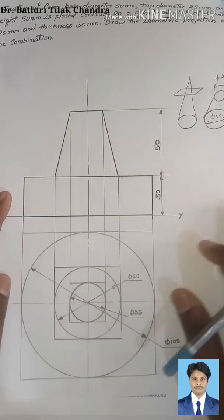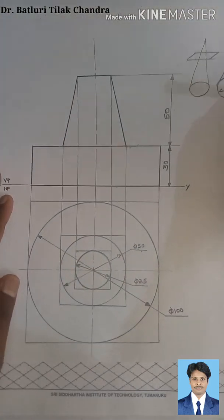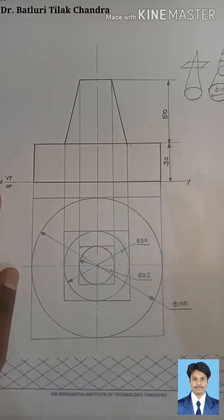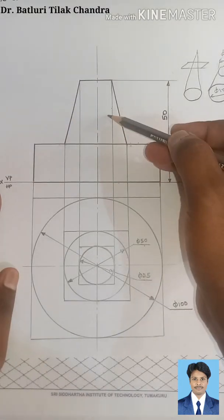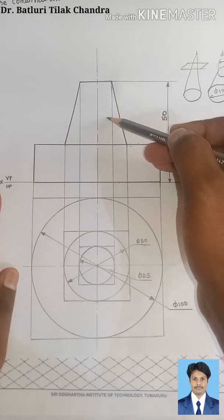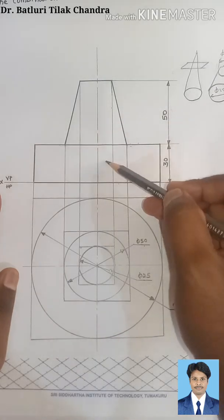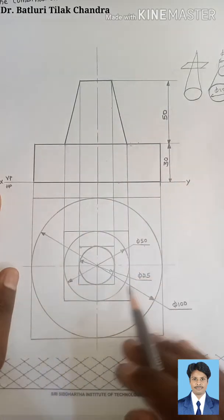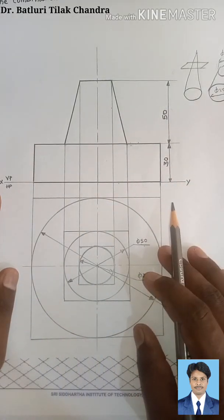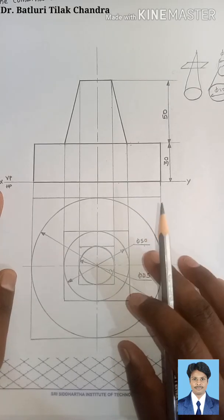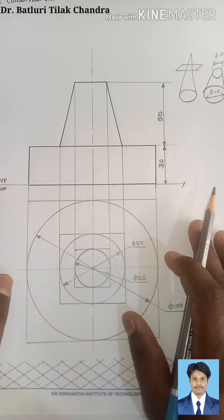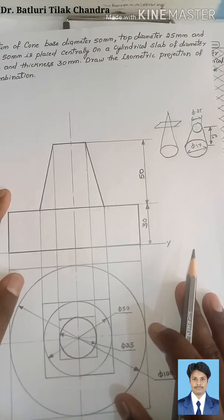Let us see the orthographic view of this problem. Here you can see in the front view the frustum of a cone, and below that the cylindrical slab. You can see the same thing in the top view. Before understanding the orthographic view, let us know what is a frustum of a cone.